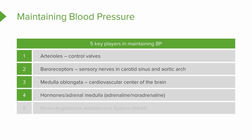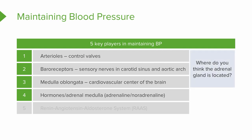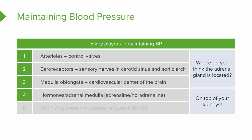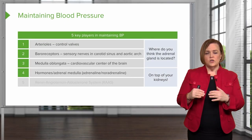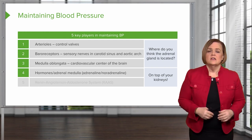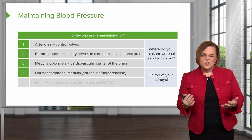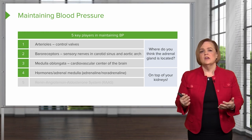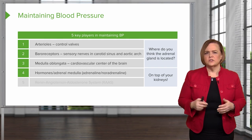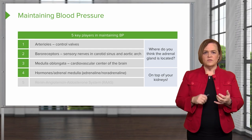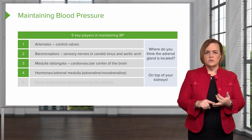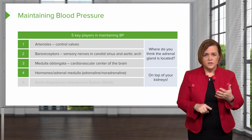Number four: hormones from the adrenal medulla. The adrenal glands sit on top of your kidneys — they're not part of the kidney, but that's what we call them. The adrenal medulla is one of the two parts of the adrenal gland; the other is the adrenal cortex, which puts out corticosteroids and glucocorticoids. When we're talking about maintaining blood pressure, we're addressing things in the adrenal medulla.